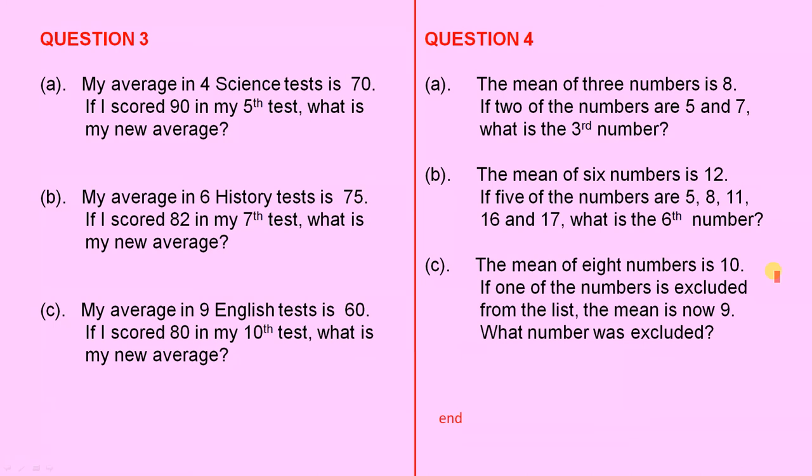And the next part, Part C: The mean of 8 numbers is 10. If one of the numbers is excluded from the list, the mean is now 9.